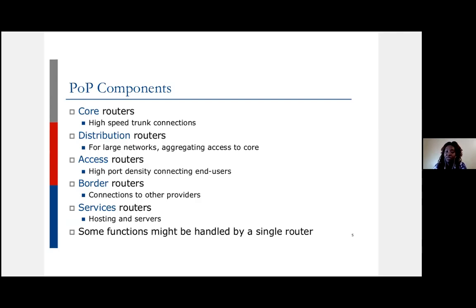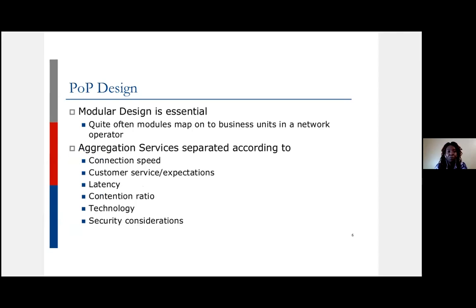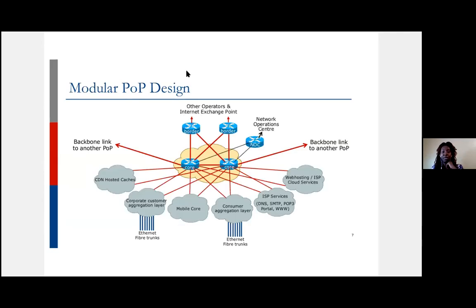You can also have service routers hosting infrastructure or resources you provide as a service — like hosting or virtual servers. Some of these functions can be done by the same router; you don't need to buy six routers just to have a PoP. But this modularity is what you want to think about. A modular design is essential — you want to differentiate your different services, different areas of your network, and be able to control this and give customers reliable service.